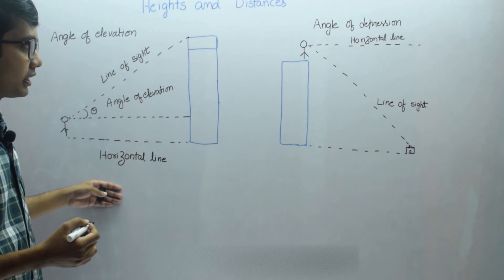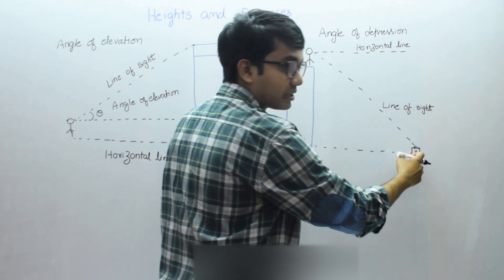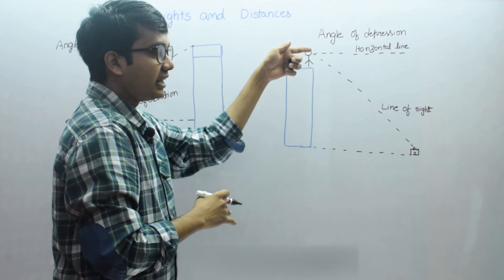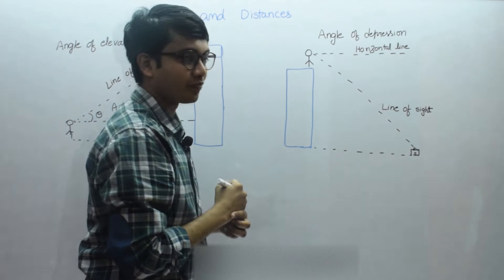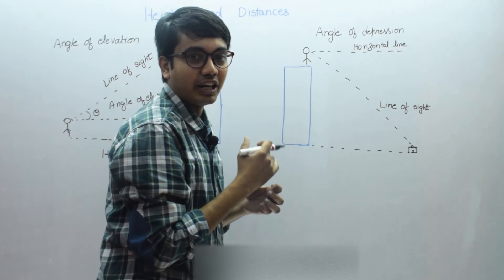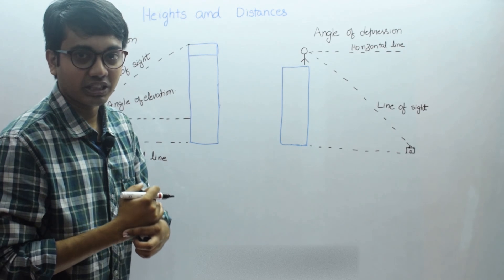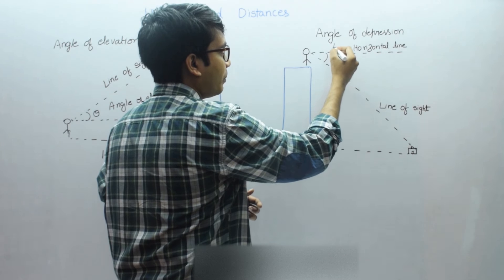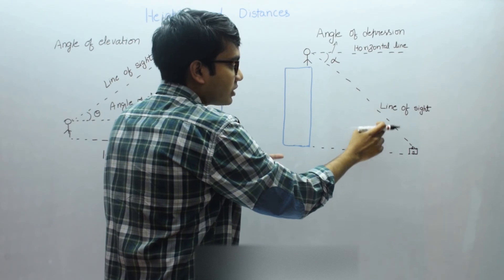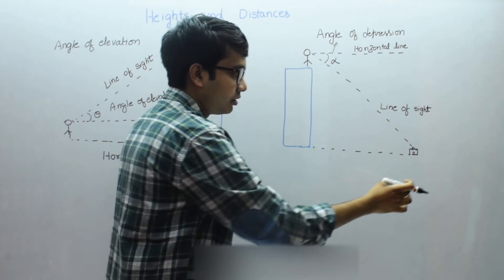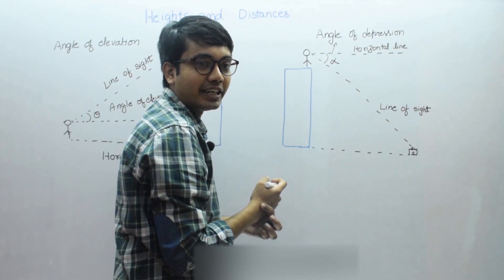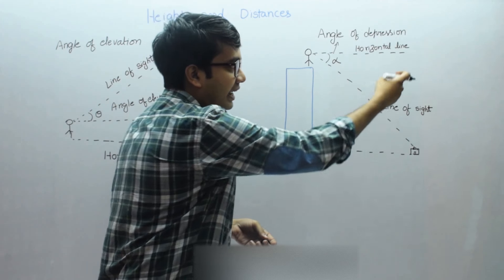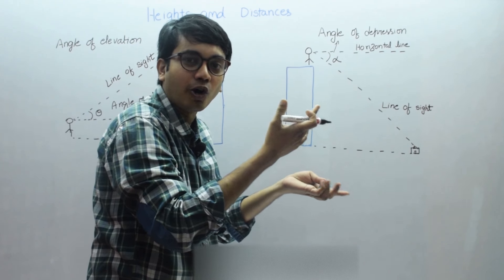You might be wondering — the horizontal line here is up, not down. Previously, the boy was looking up with respect to the horizontal line, but in this case the boy is looking down with respect to the horizontal line. That is why the horizontal line is at the top. The angle of depression is the angle made by the line of sight with this horizontal line — let it be alpha — when the object being viewed is below the horizontal line. Since he is viewing it downwards, this angle alpha will be the angle of depression.